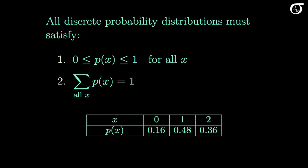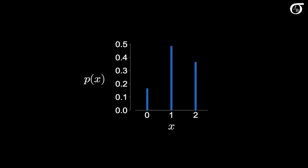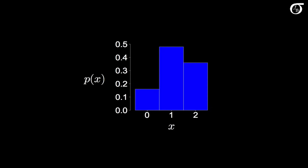We've listed the probability distribution in a table, but we might display it in other ways. For example, we might plot it in a probability histogram. Here is a probability histogram illustrating the distribution of the random variable x for the example. We have the values of x along the x-axis and the probabilities on the y-axis. You might see this plotted in slightly different formats with thin bars and spaces in between them, but I typically plot it in this fashion.